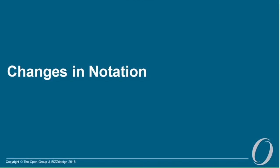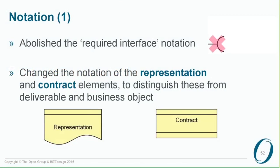There are a few changes in notation. We abolished the required interface notation — hardly anybody uses it, it's awkward, and it didn't have a good position in the metamodel; it was a kind of 'missing interface' that didn't fit the structure of ArchiMate. We also changed the notation for representation and contract slightly, because they looked like deliverable and business objects respectively. By adding an extra line, you can now easily see the difference — contract has a line at the bottom, and representation has a line at the top.